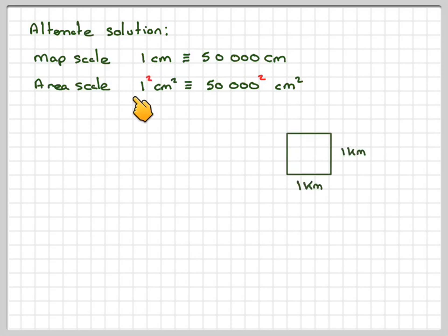Going from a length ratio to an area scale, you need to square them. Then, if we look at 1 kilometre by 1 kilometre is 1 kilometre squared.